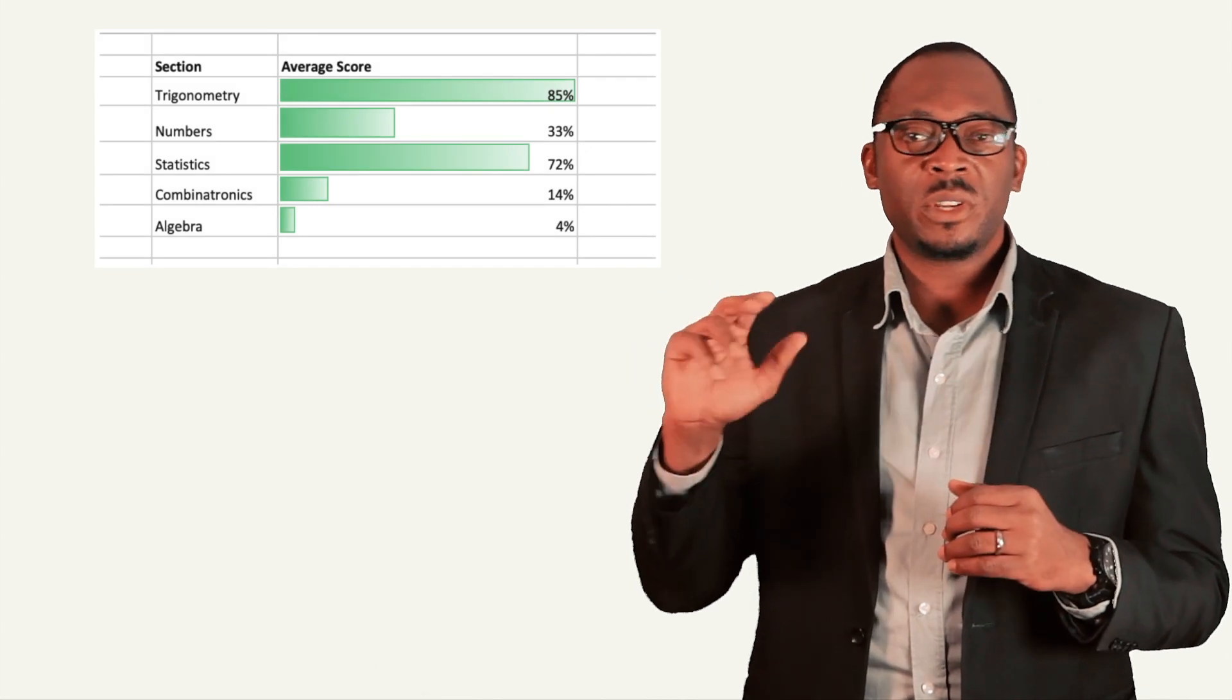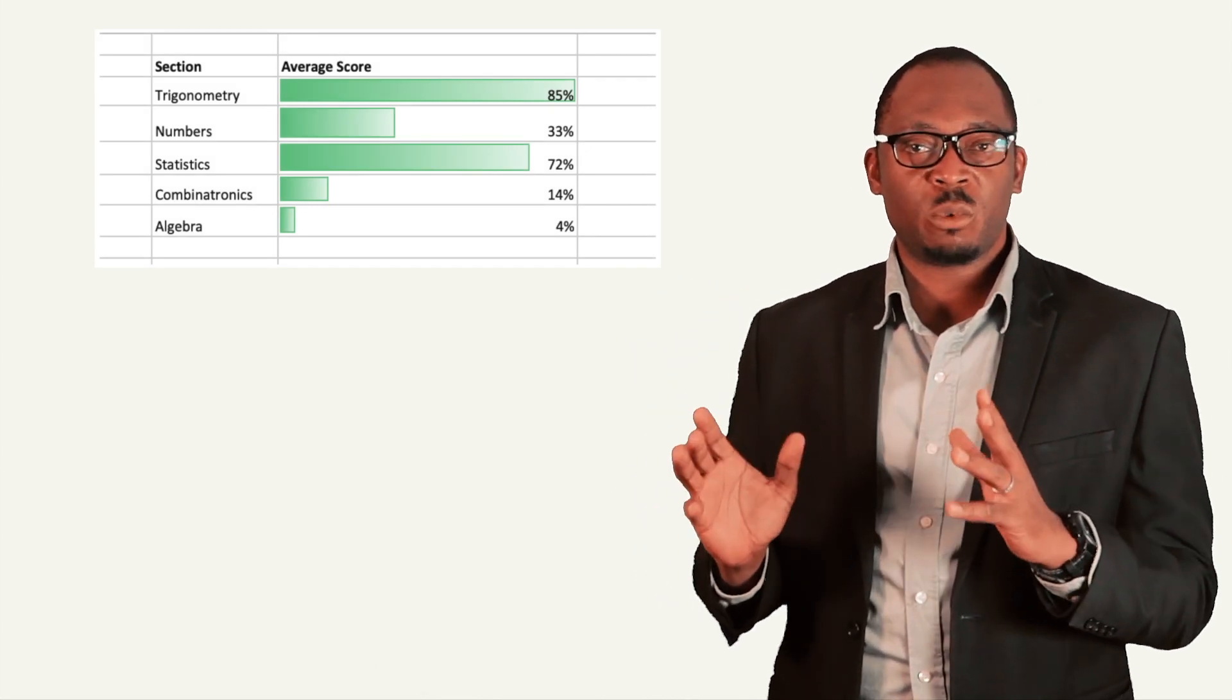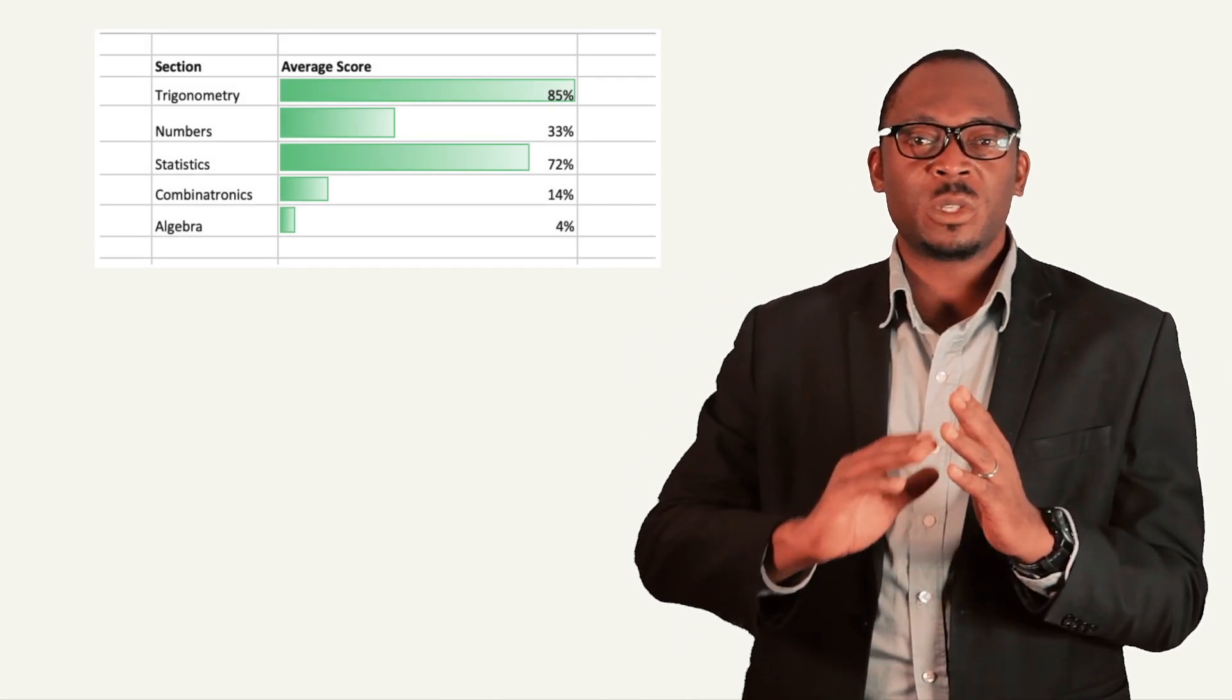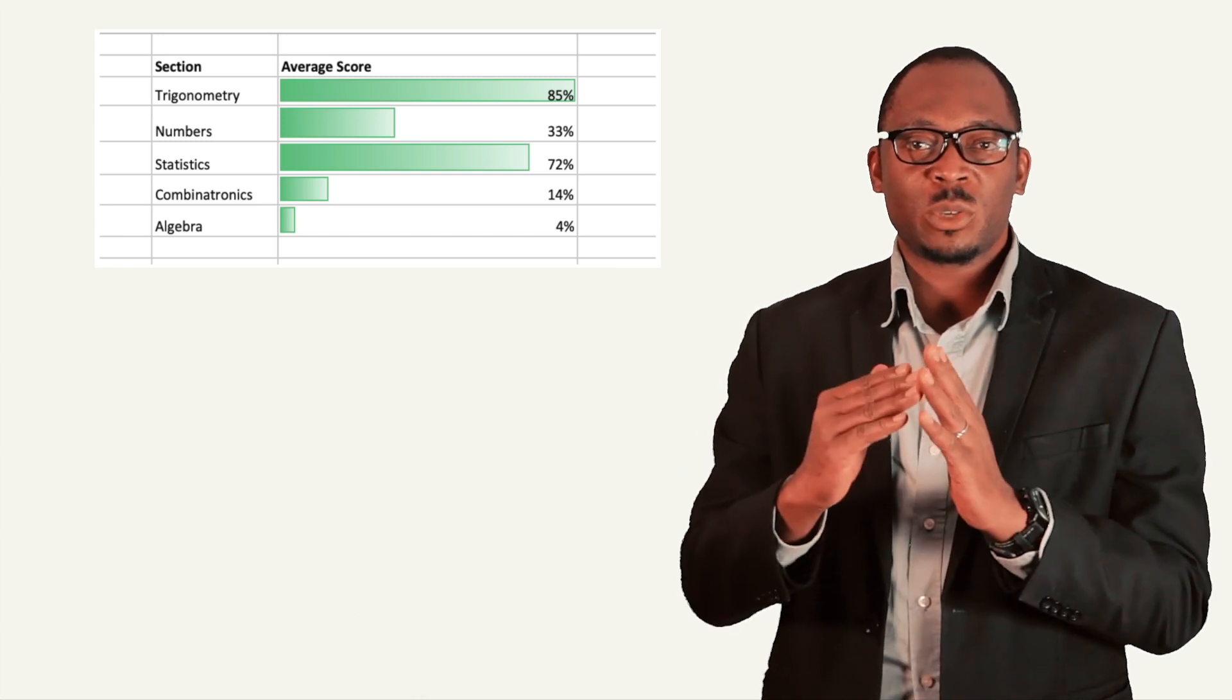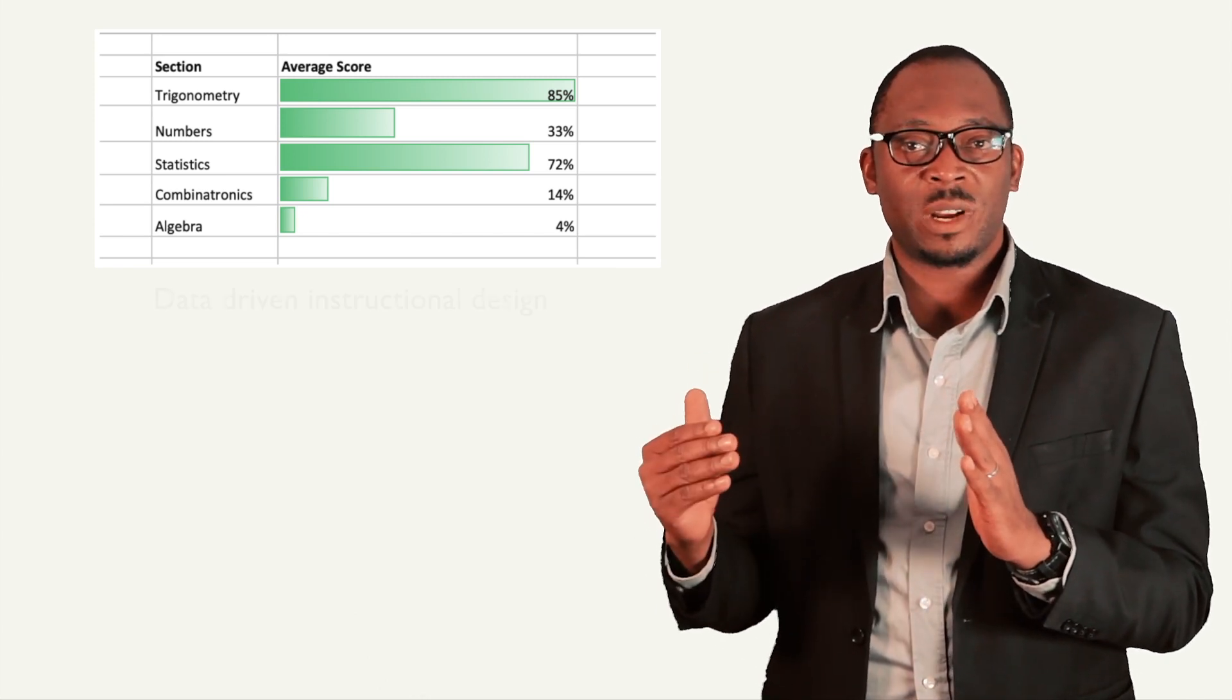If you saw a graph that said my number and numeration is okay, combinatorics is not too good, algebra is pretty poor, then you would be able to design your lessons to help your students get better at algebra.